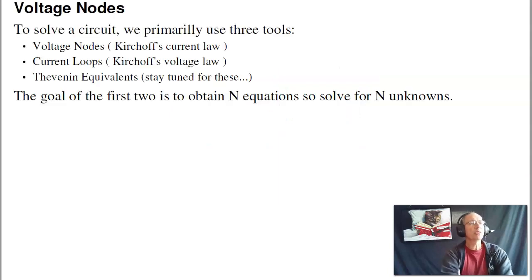Now in general, when you have an electric circuit, we've got three tools we can use to solve that circuit. You can use voltage nodes, which is based upon Kirchhoff's current law. It's the voltages that make all the currents add to zero at each node. You've got current loops. Current loops uses Kirchhoff's voltage law. It's the currents so that the voltage adds to zero around any closed path.